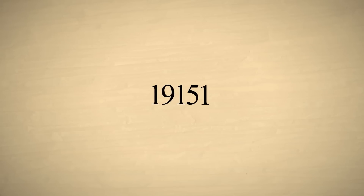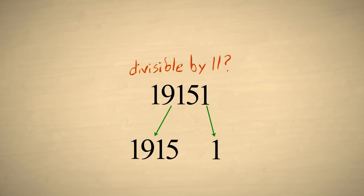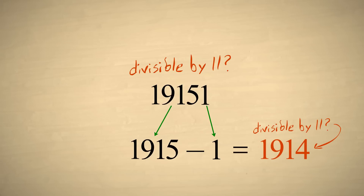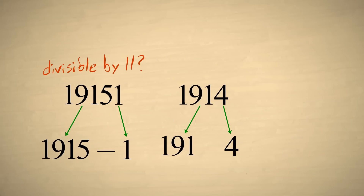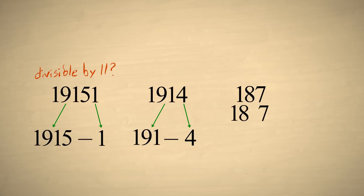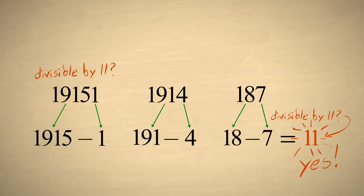There are many tricks for testing whether a number is divisible by other primes. For instance, to determine if a number is divisible by eleven, first separate the last digit from the rest of the digits in the number. Then subtract the last digit from the number formed by the other digits. If the result is divisible by eleven, then so is the original number. If it is not obvious whether the result is divisible by eleven, the process can be repeated with the number formed by the other digits. There are similar techniques for determining if a number is divisible by other primes, like seven, thirteen, seventeen, nineteen, and so on.